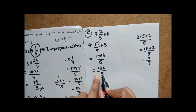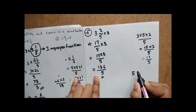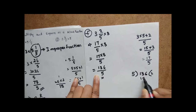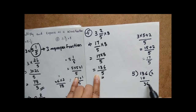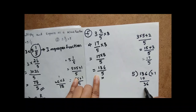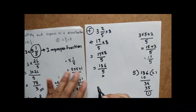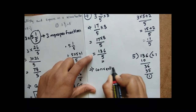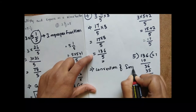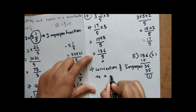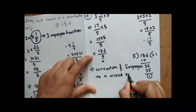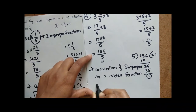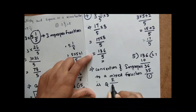Now we have to express 136 by 5 as a mixed fraction. Applying division: 5 into 136 — 5 twos are 10, 5 sevens are 35, giving quotient 27 and remainder 1. There is a simple formula for conversion of an improper fraction to a mixed fraction: quotient remainder by divisor.